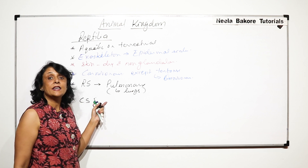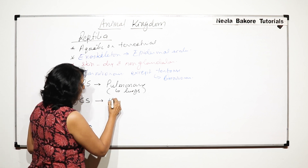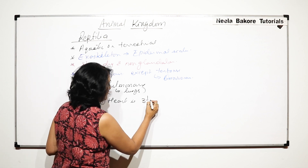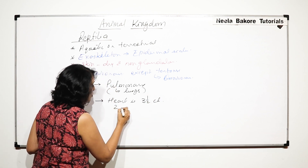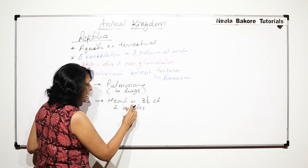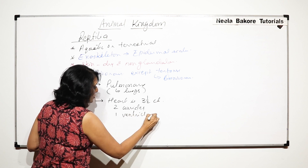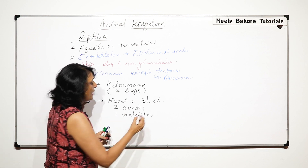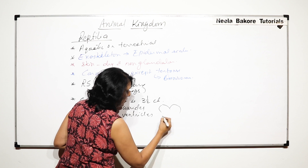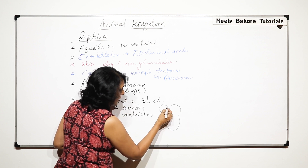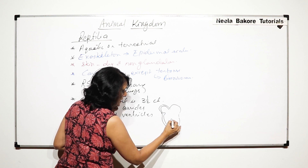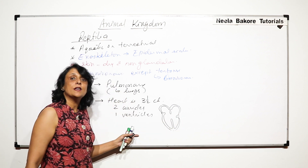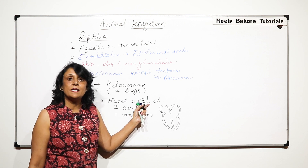In the circulatory system, there are some important things. The heart is three and a half chambered. There are two auricles or atria and one ventricle, so basically there are three chambers. But this ventricle is incompletely divided — the septum divides the ventricle but the partition is incomplete. So we normally say three and a half chambered heart, or two auricles and one ventricle.